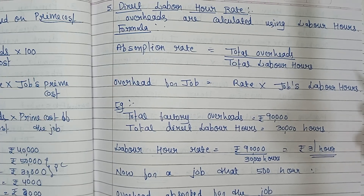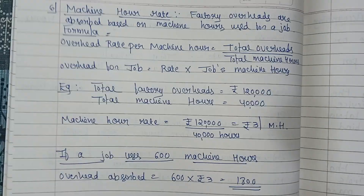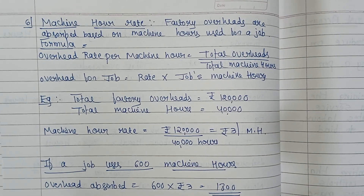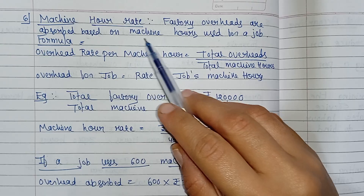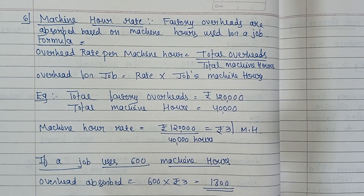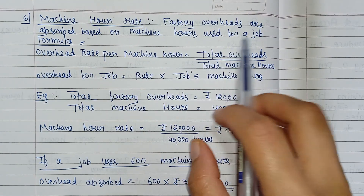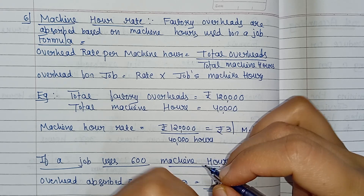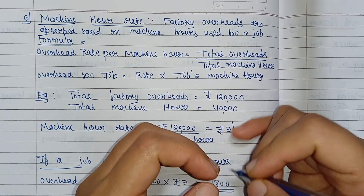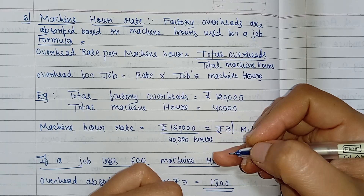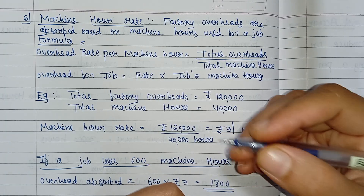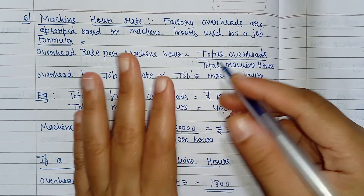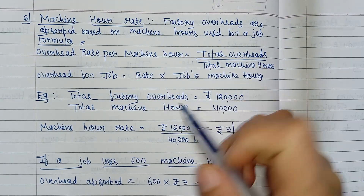These formulas are very easy to remember, and if you know the formulas it's very easy to solve the problems. Direct labor hour rate is our fifth method. The sixth method is machine hour rate. Here, factory overheads are absorbed based on the machine hours used for a job. This method is very useful in industries where machine work is more than human work — where they utilize machines more than humans.